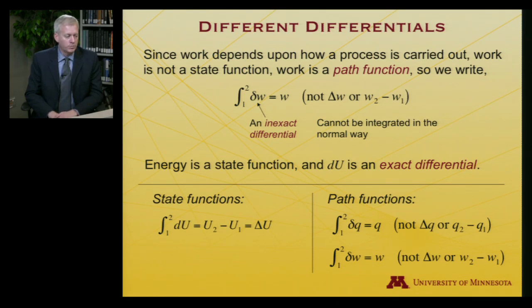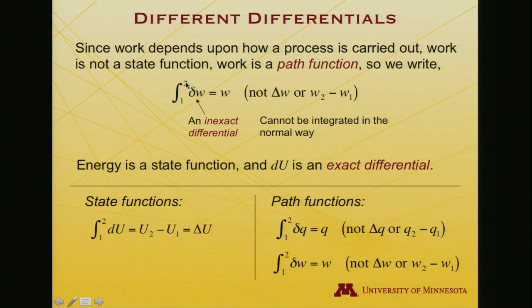So, since work depends upon how a process is carried out, work is not a state function. We call it a path function. And we use slightly different notation. So we'll write an integral from state 1 to state 2, not of d, little d, the differential symbol in mathematics, but little delta, the small Greek character delta, to emphasize that this is an inexact differential. And we don't say W2 minus W1 because there is no concept of a work at state 2 or a work at state 1. We just say W. Right? And it's going to have to have some specification of path in order to get a value for W.